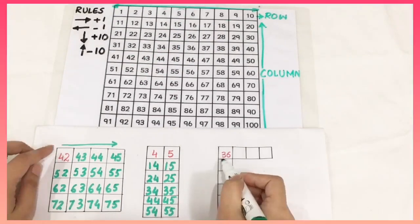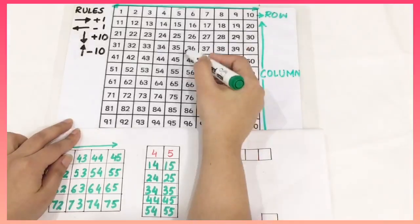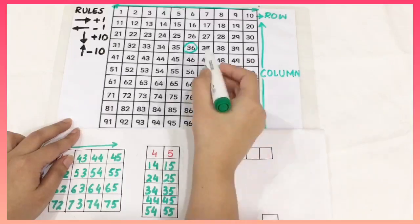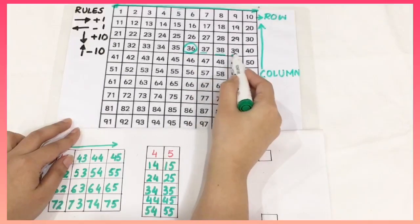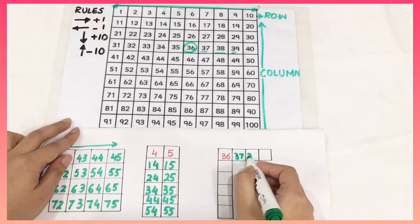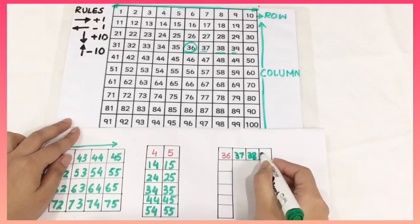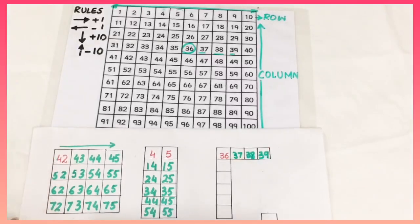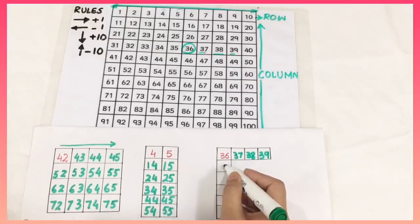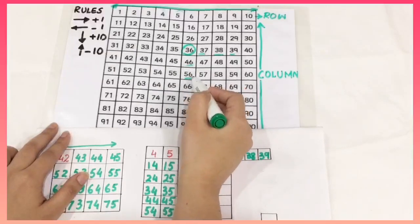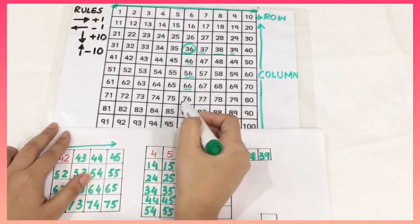Now number 36. I am going to circle 36 on my 100 square chart and then I am going to fill 1, 2 and 3. This is 37, 38, 39. Now I am going to fill the column. This is 46, 56, 66 and 76.